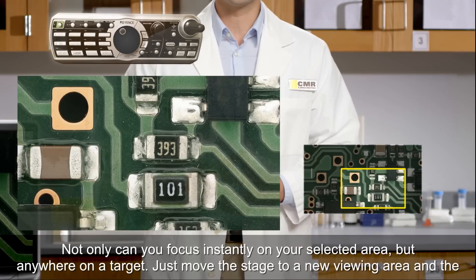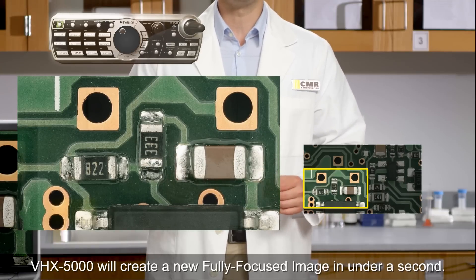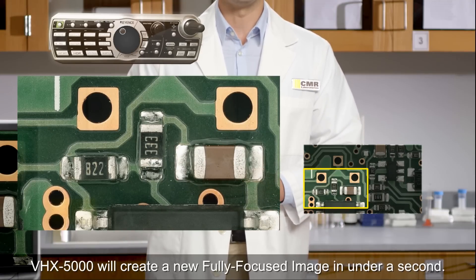Not only can you focus instantly on your selected area, but anywhere on a target. Just move the stage to a new viewing area and the VHX5000 will create a new fully focused image in under a second.